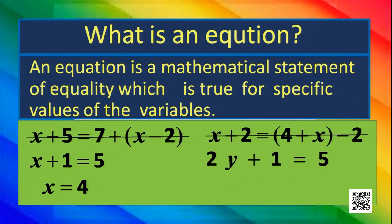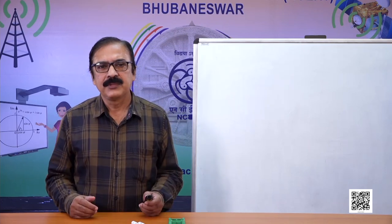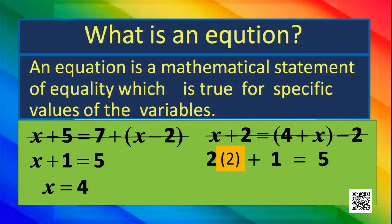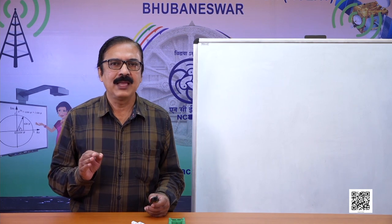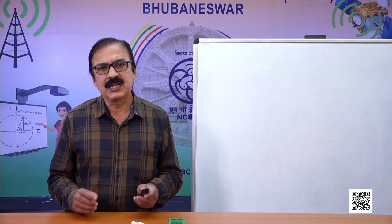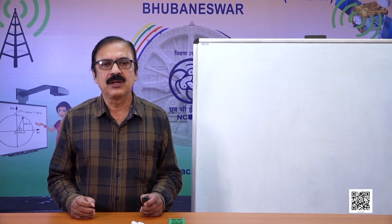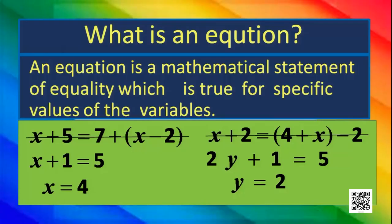Let's consider another situation: 2y plus 1 is equal to 5. That means which number, twice of which number added with 1 gives 5? Definitely it is 2. So 2 into 2 gives 4, plus 1 gives 5. That means for the value of y as 2, this statement is satisfied. So we can say y equal to 2 is the solution of 2y plus 1 equal to 5.